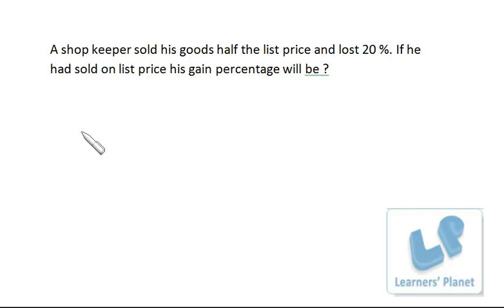A shopkeeper sold his goods half the list price and lost 20%. If he had sold on list price, then his gain percentage will be.